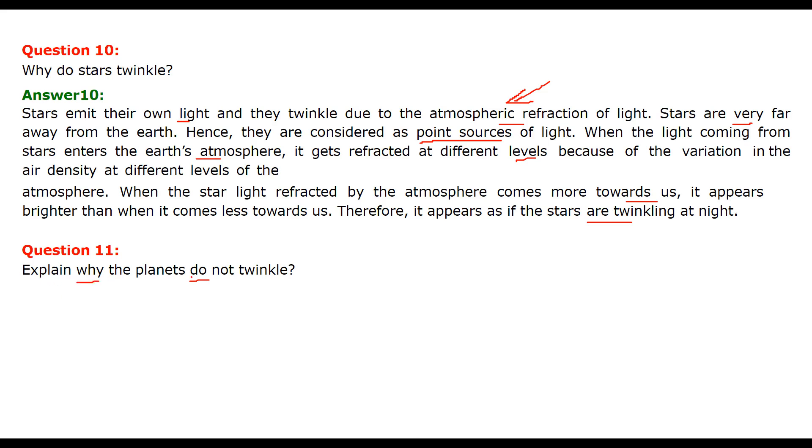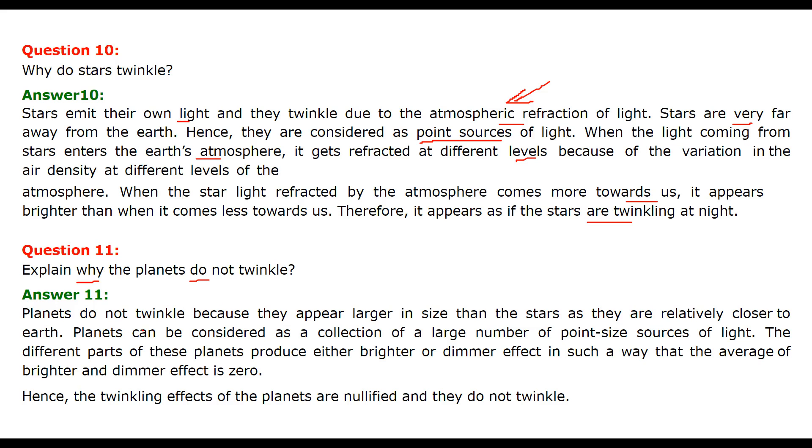Explain why planets do not twinkle. Planets do not twinkle. They are larger in size and relatively closer to earth compared to stars. Planets can be considered as a collection of large number of point sources of light. Different parts of the planet produce either brighter or dimmer light, and they nullify each other. The net effect is zero. Therefore, the twinkling effects of planets are nullified and they do not twinkle.